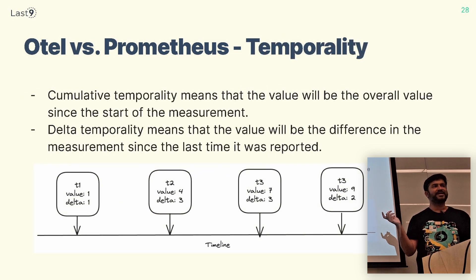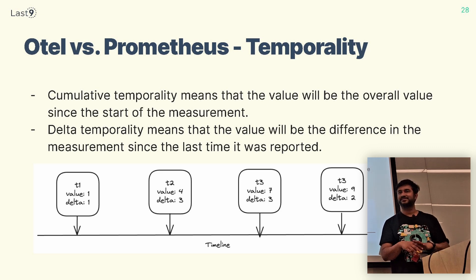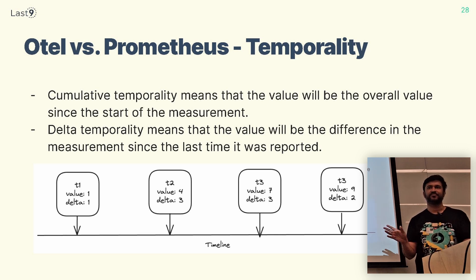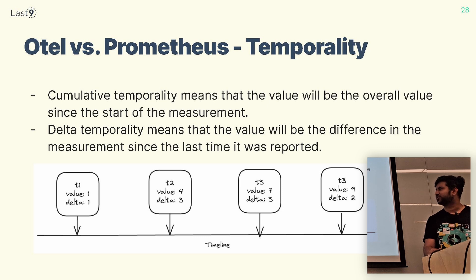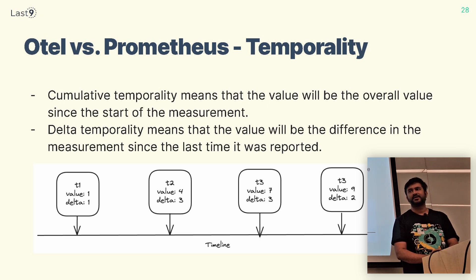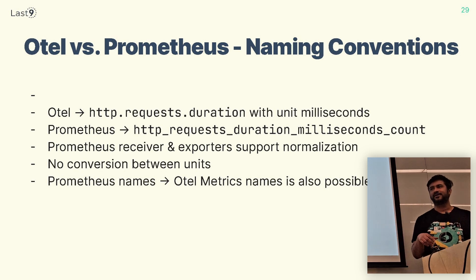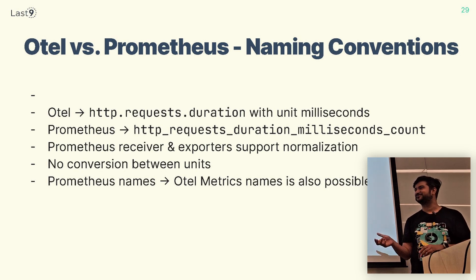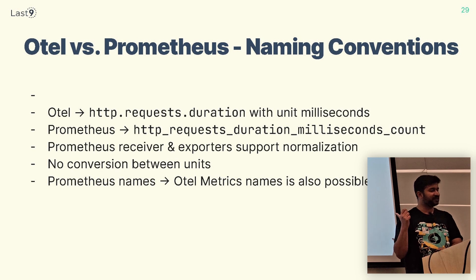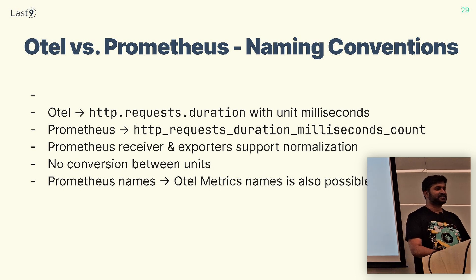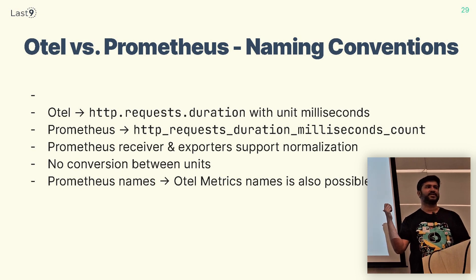With respect to temporality, Delta temporality is something OTLP supports. Right now Prometheus doesn't support it — if you're instrumenting metrics using Delta temporality, Prometheus just drops them. Only cumulative data will be stored. However, there is a feature request, and in the next major release of Prometheus they're adding Delta temporality support. Naming conventions are another challenge: OTLP uses dots, which are considered bad for metric and label names in Prometheus. Prometheus is working on adding UTF-8 support where dots will become valid, but for now the conversion happens at the processor layer.